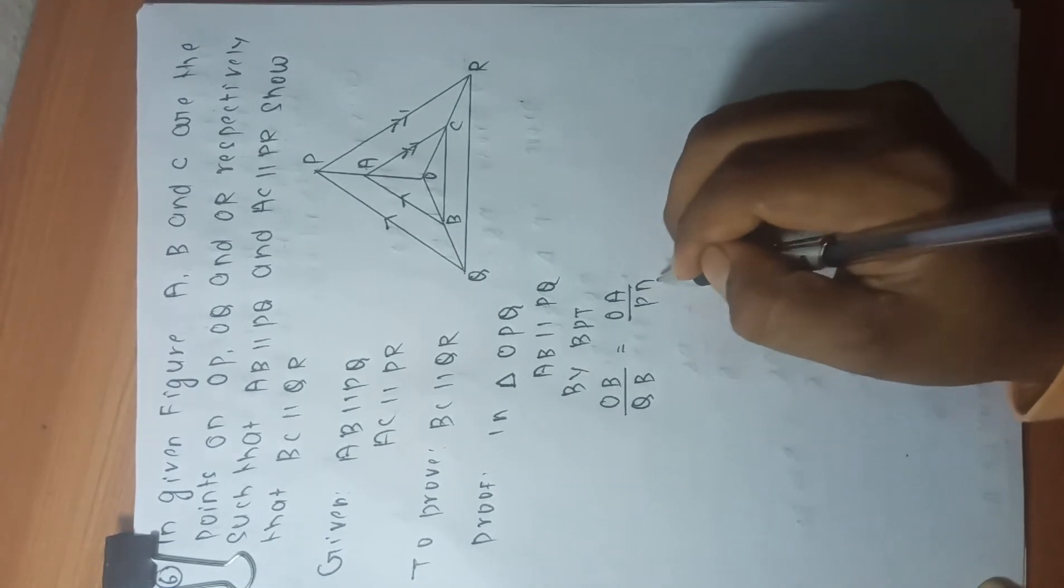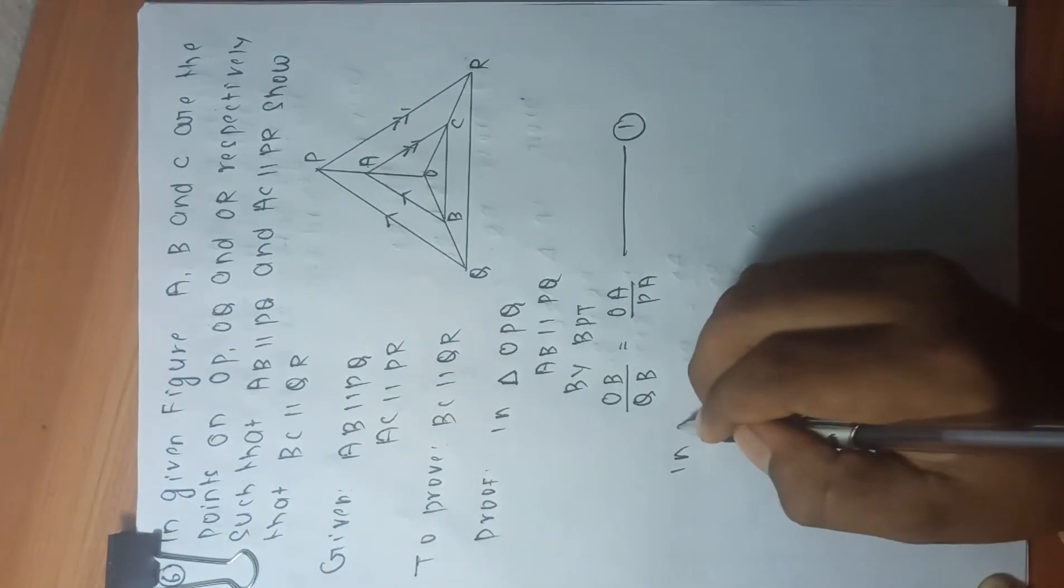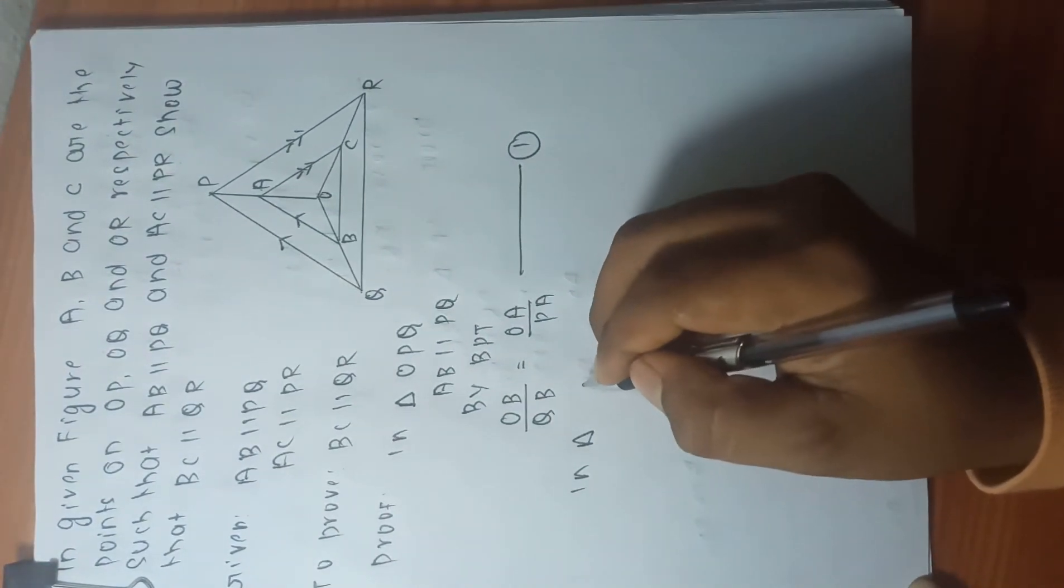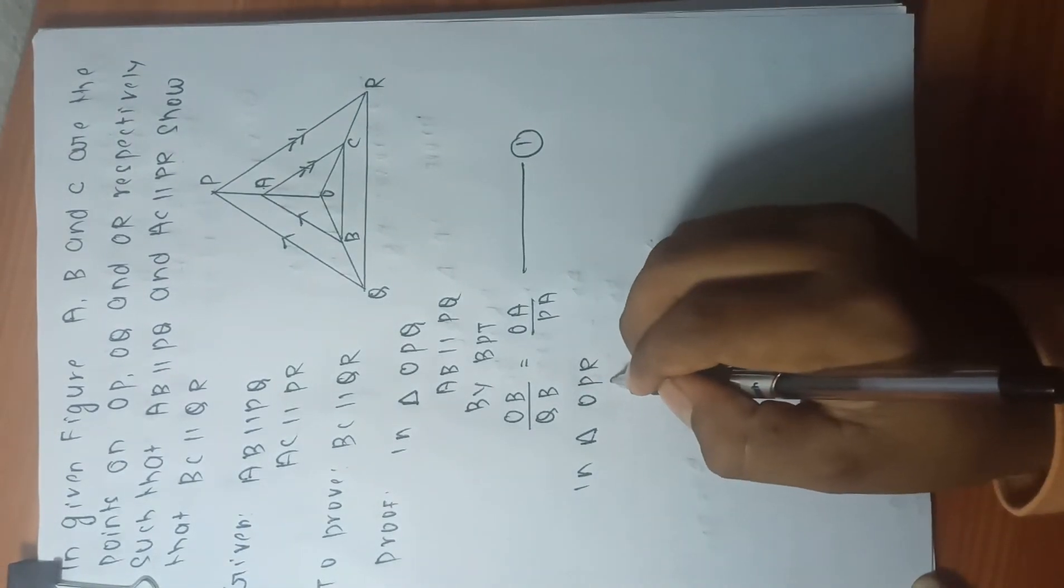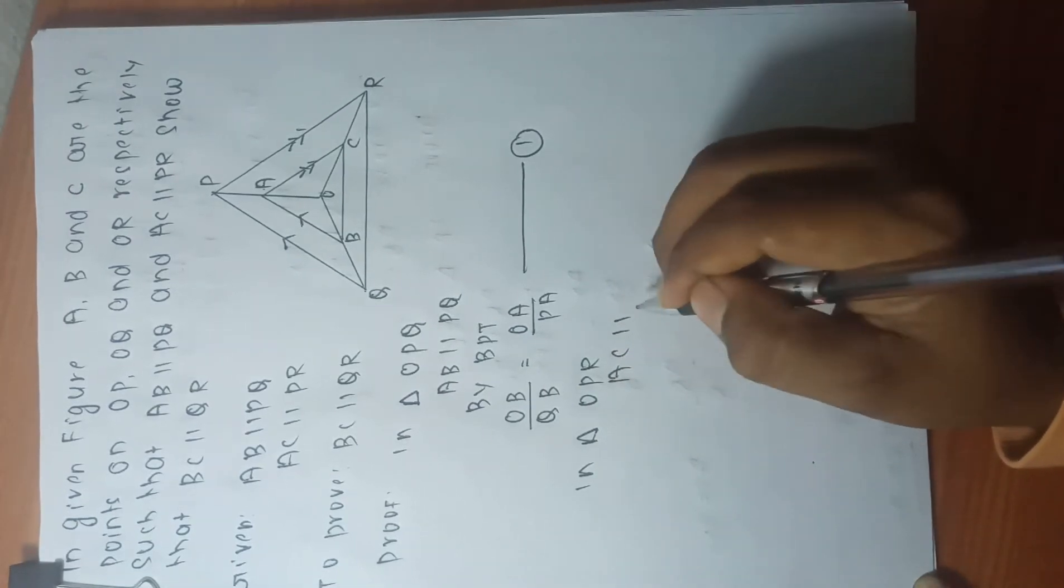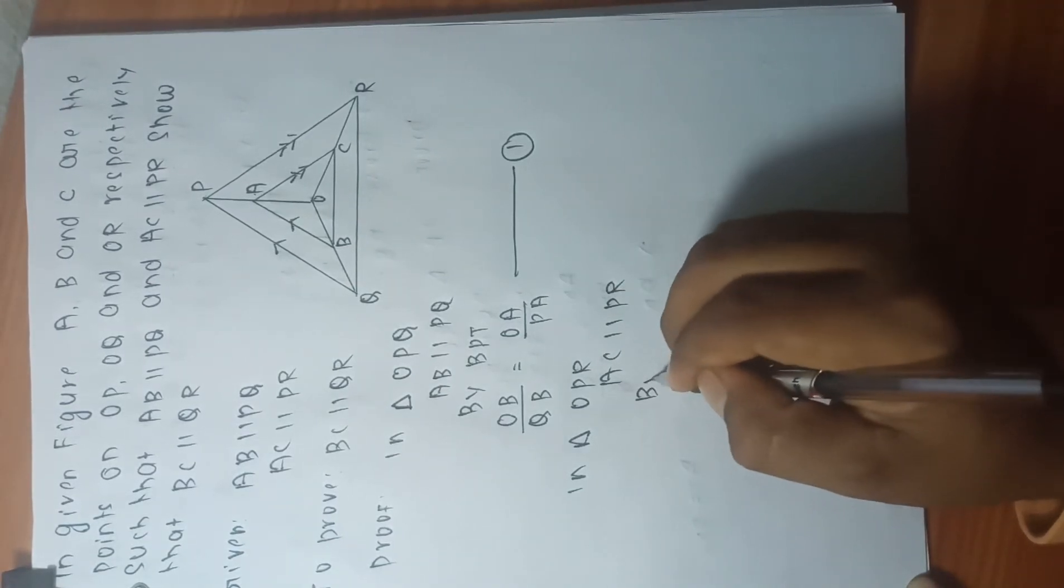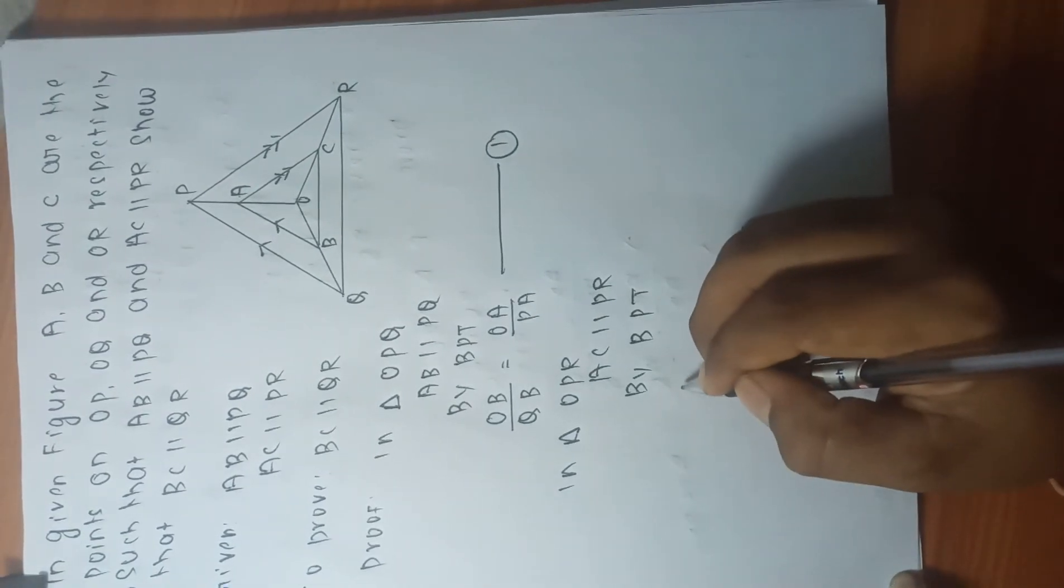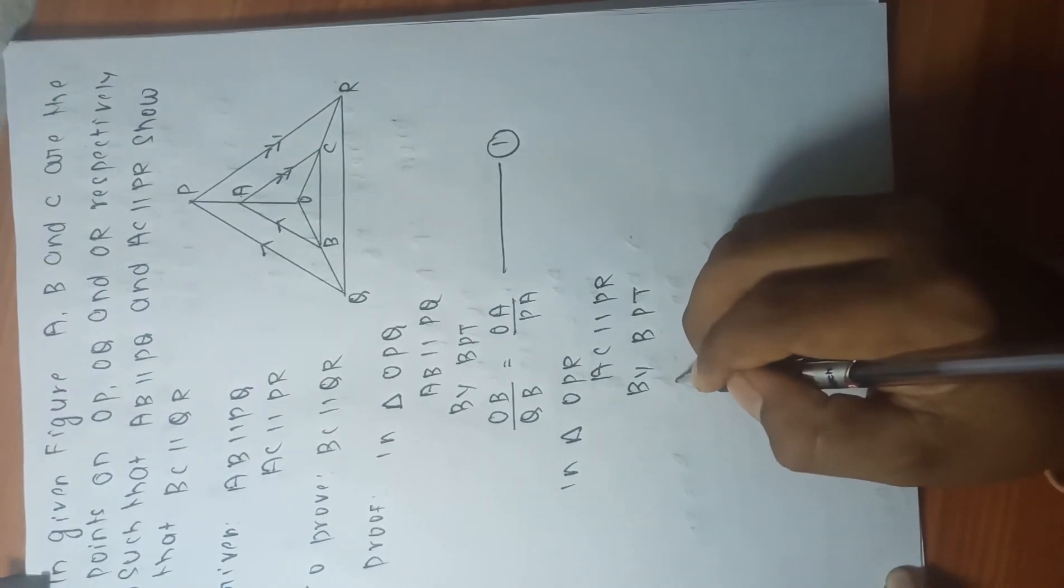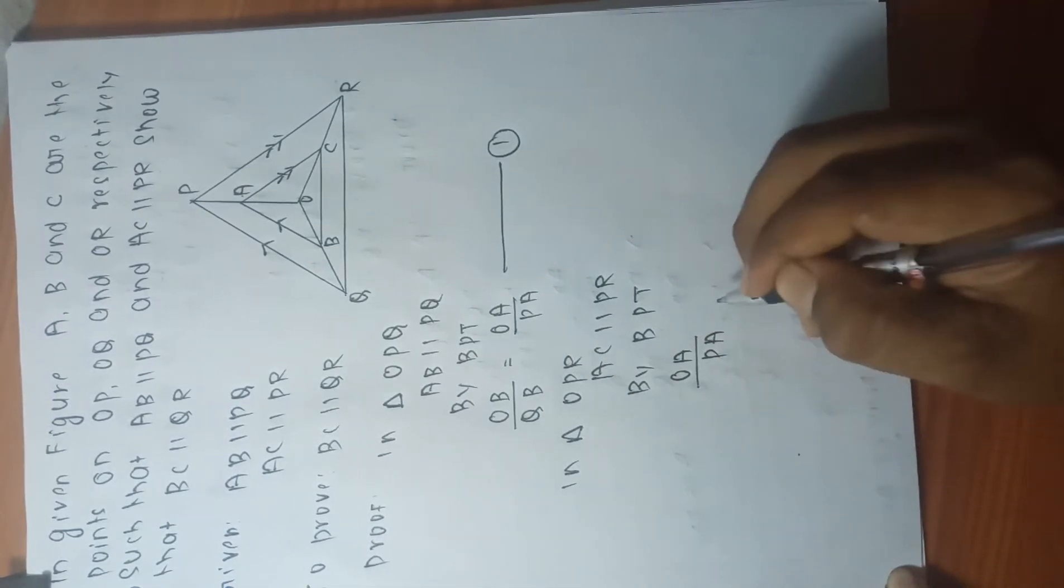Again in triangle OPR, AC is parallel to PR. So by BBT we can write OA by PA equals OC by RC. This is equation number 2.